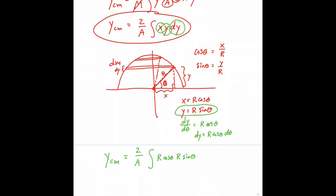So we have x, we have y, and now we have dy r cosine theta dθ.